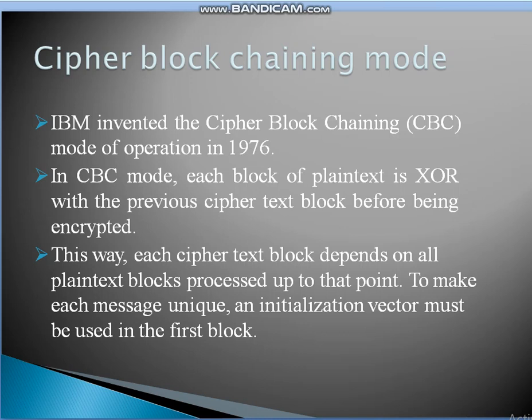The second algorithm is Cipher Block Chaining mode. IBM invented the Cipher Block Chaining mode in 1976. In CBC, each block of plain text is XOR-ed with the previous ciphertext block before being encrypted. This way, each ciphertext block depends on all plain text blocks processed up to that point. To make each message unique, an initialization vector must be used for the first block.